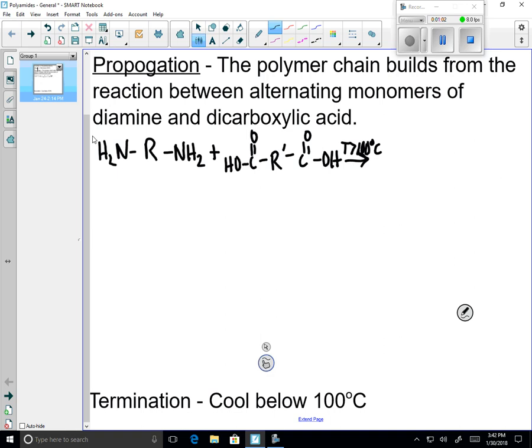The reaction occurs at the site of the functional groups. We're removing a water from our carboxylic acid and our amine. One of these two hydrogens is going to be removed and also the OH from the carboxylic acid. If we join up what remains, we get an amide functional group linking the two pieces together.